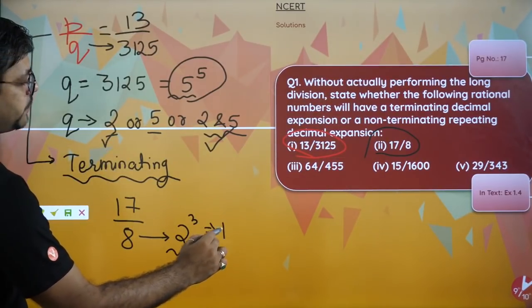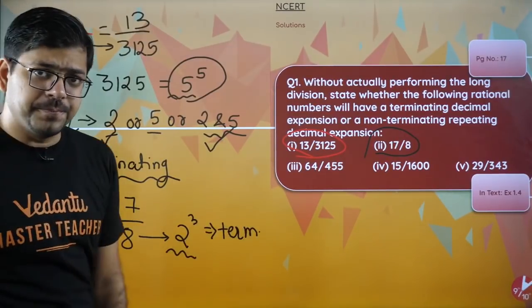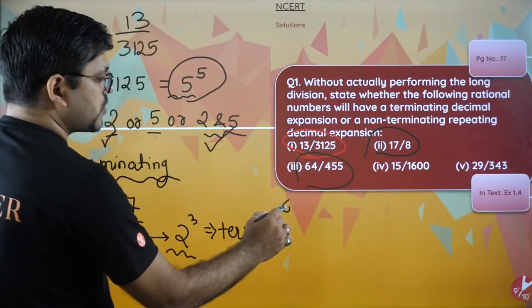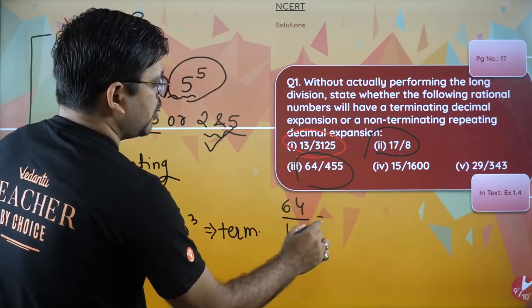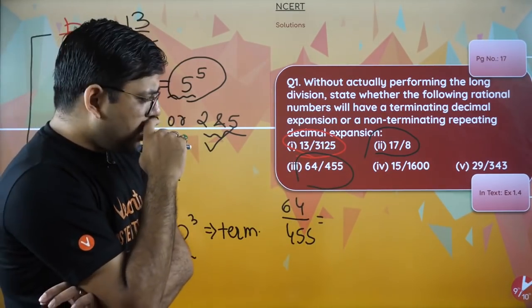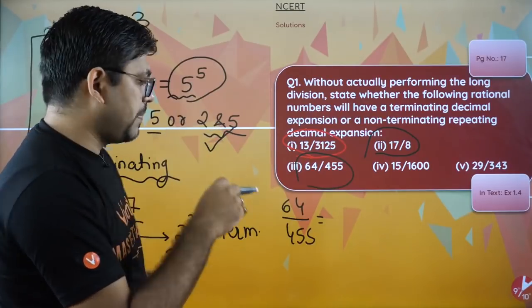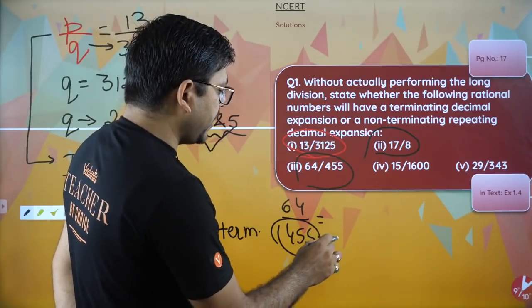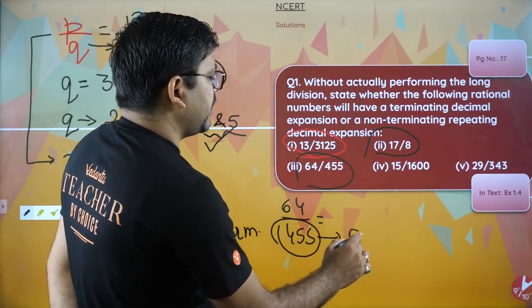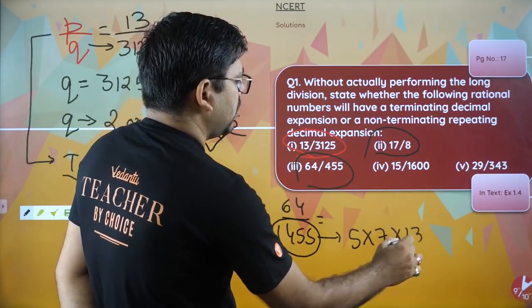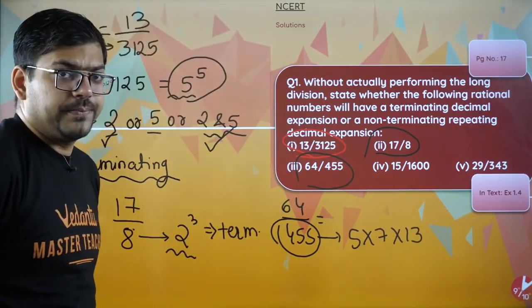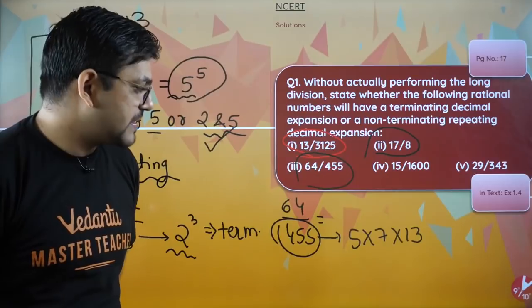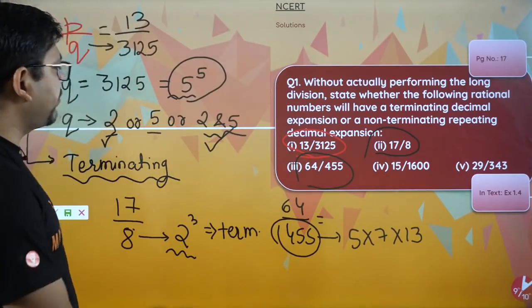Let's concentrate on the third one. If this is 64 upon 455, we need to do the prime factorization. 455, if you do the prime factorization, you will find that this is coming as 5 into 7 into 13. This is the prime factorization - 5, 7, 13.